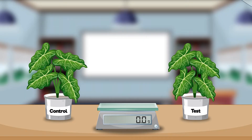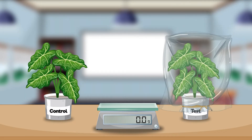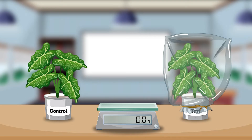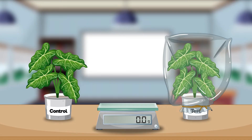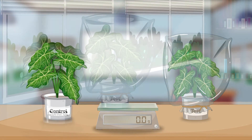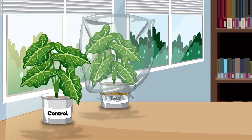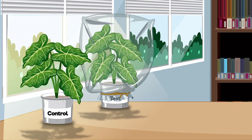Place a transparent plastic bag over the test plant and seal it to create an enclosed environment. This will limit the carbon dioxide available to the plant, reducing the amount of photosynthesis that occurs. Place both plants in a well-lit area with similar light exposure and temperature conditions.